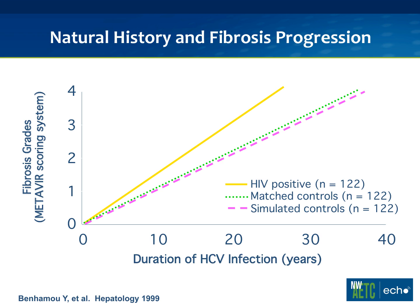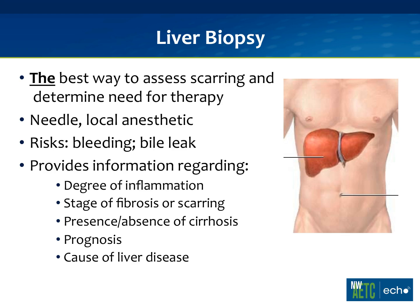This slide from researchers in France shows that patients who are HIV-positive progress more rapidly in terms of liver fibrosis compared to their HIV-negative colleagues. That's why in an HIV-negative patient with hepatitis C we might do a biopsy every four to five years, while in an HIV-positive patient we do them more frequently — typically every two to three years — because we know this can sometimes progress rapidly.